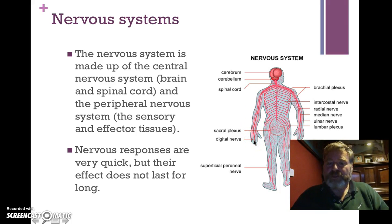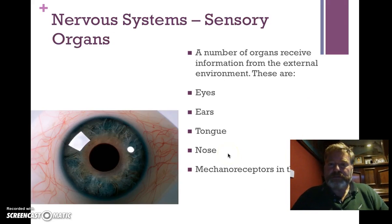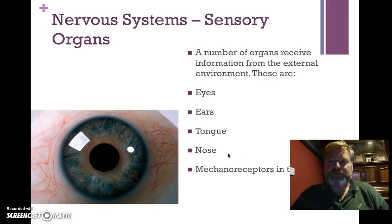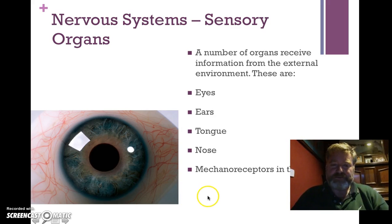The central nervous system decides it's time to lift your hand off that hot plate and sends that message back down via the motor neuron, which causes the muscle to contract and you stop burning yourself. Nerve responses are really quick and short-lived.